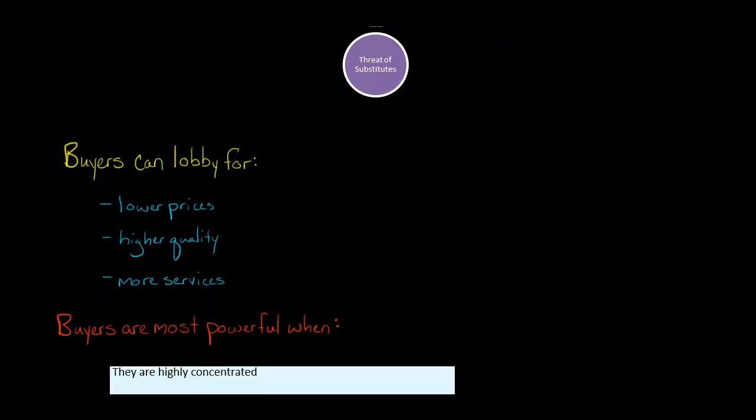Every industry is different, and buyers are going to have the most power when they're highly concentrated. So think about an industry where you had 50 million different buyers, 50 million different people that buy the product, versus an industry where there's really only one buyer.